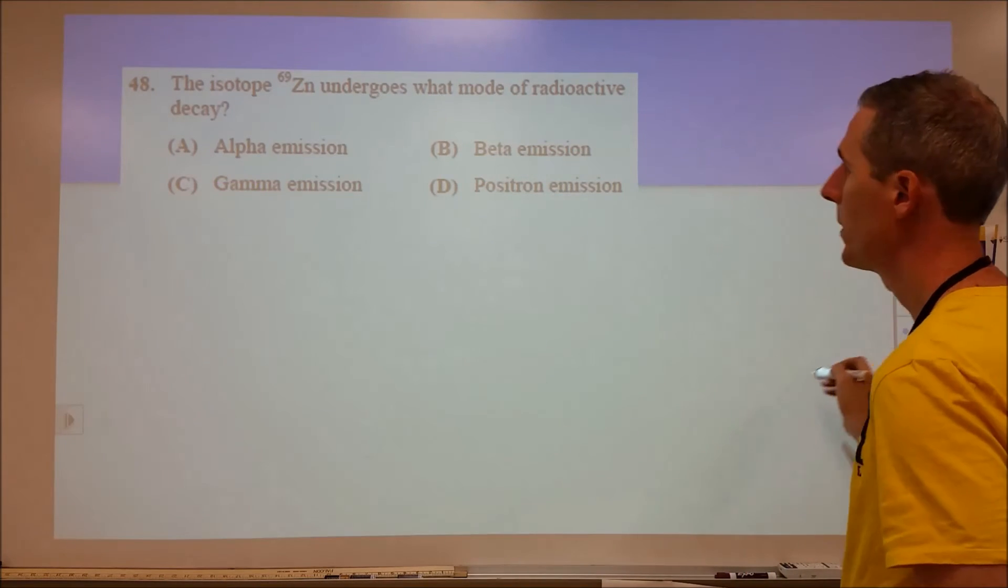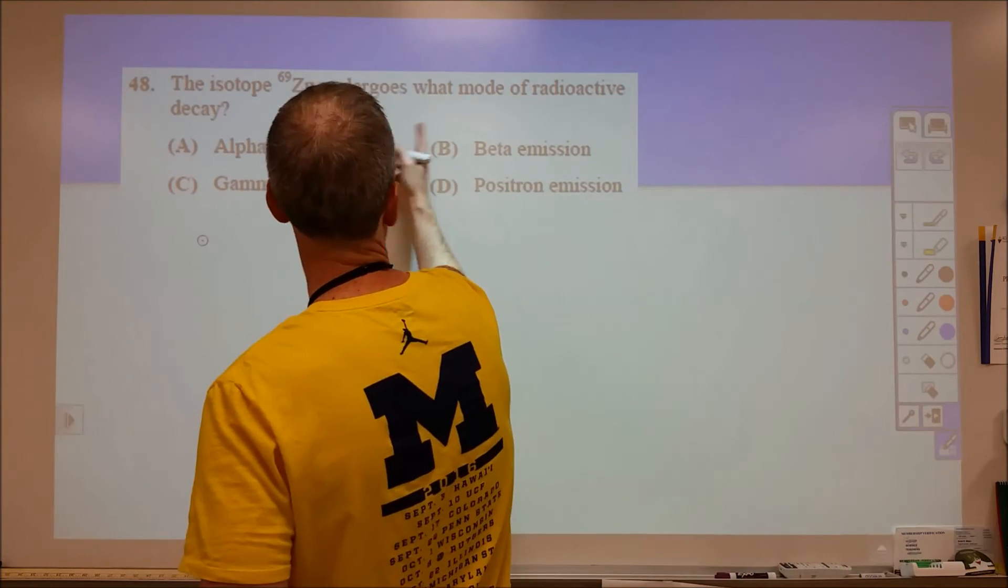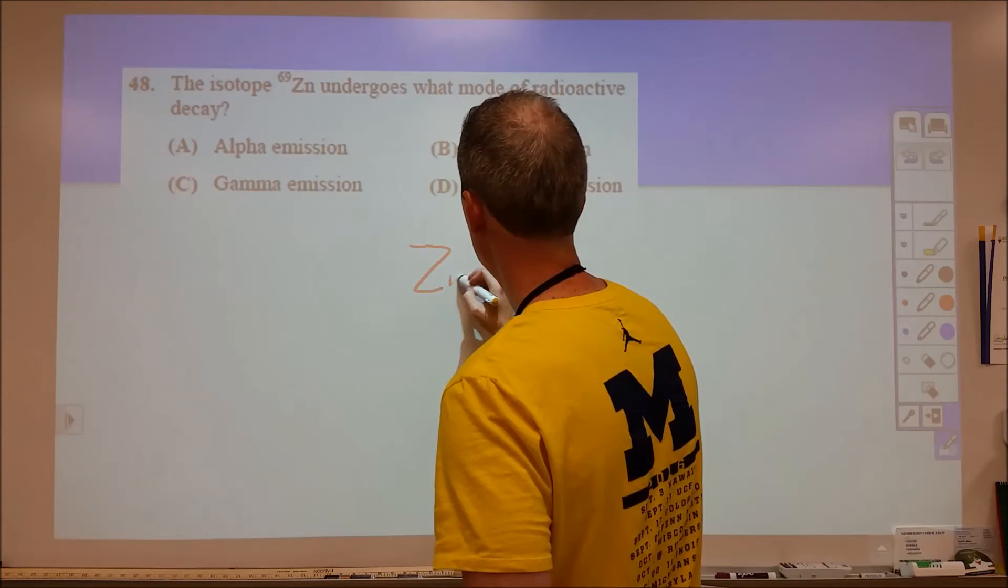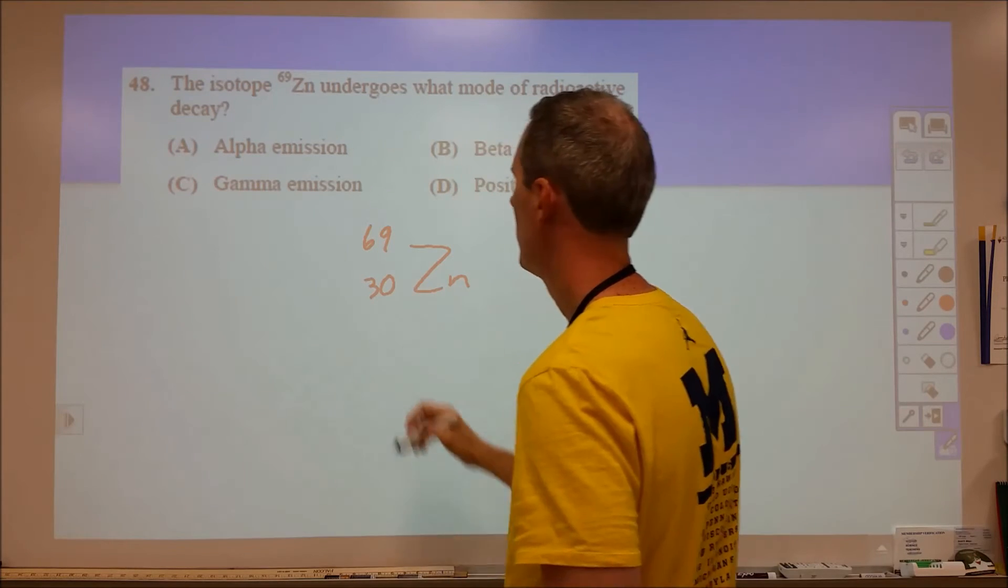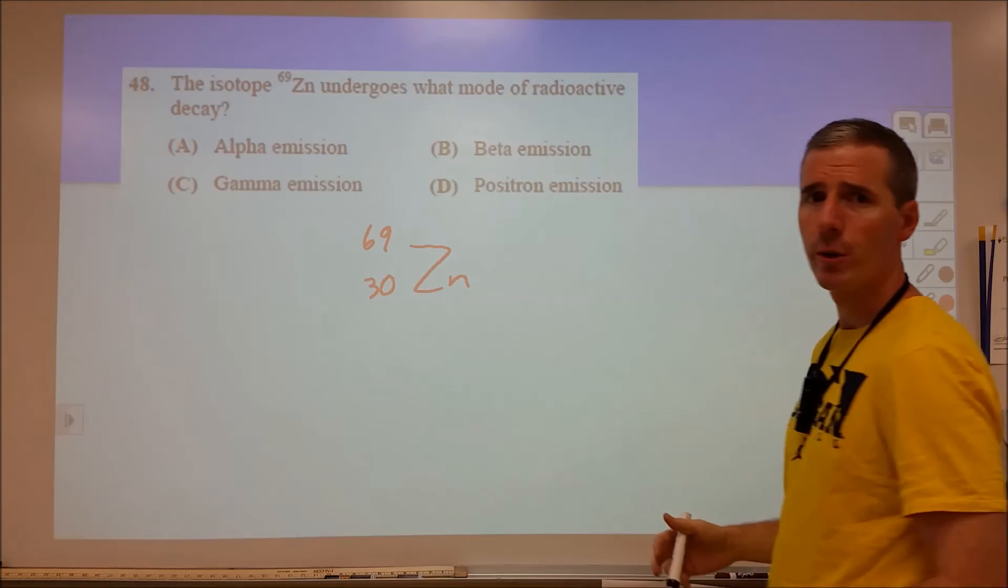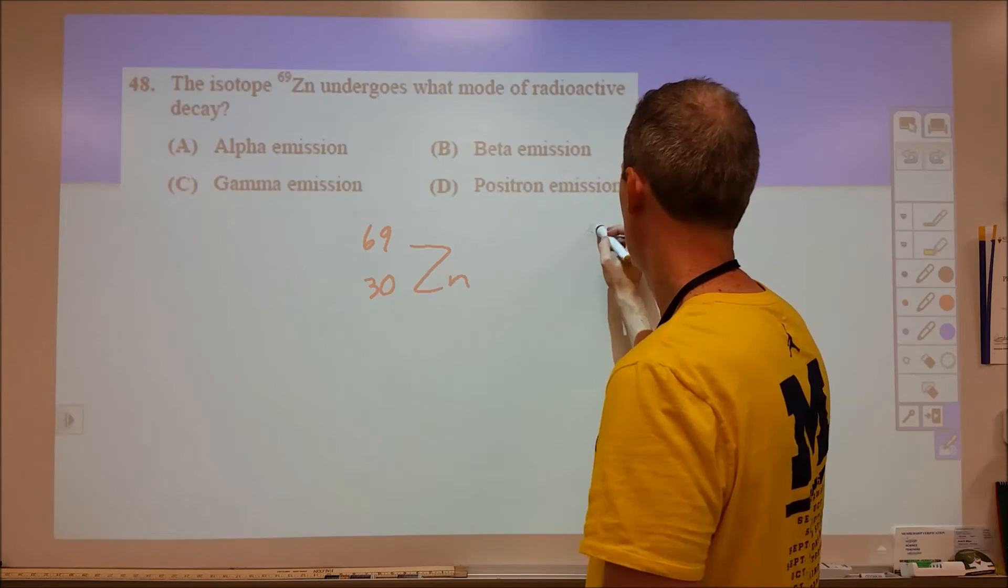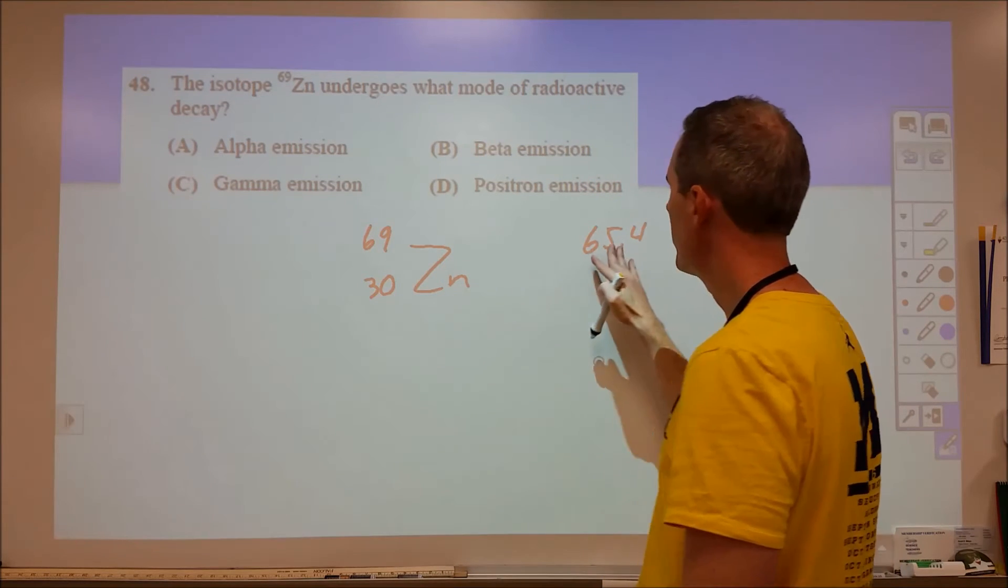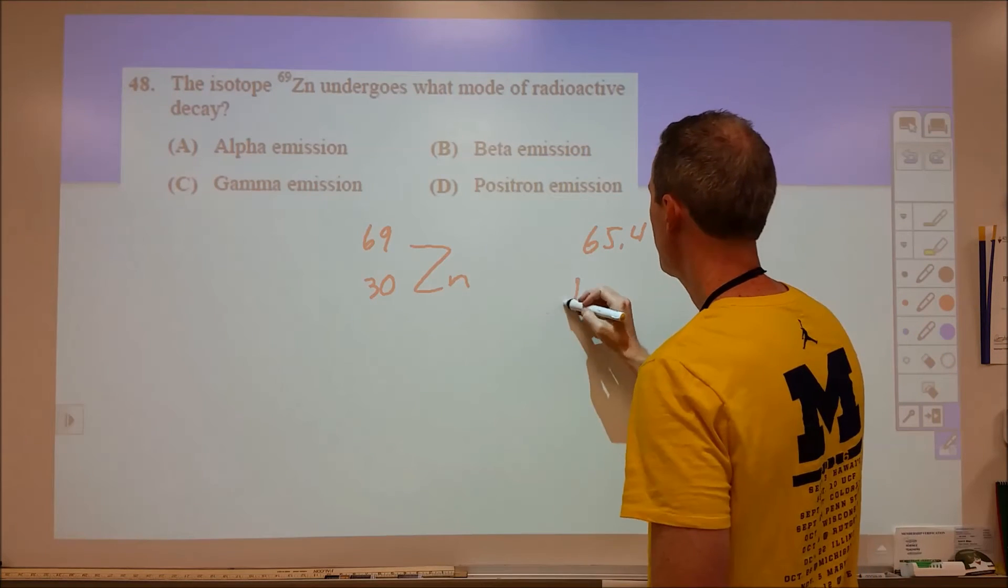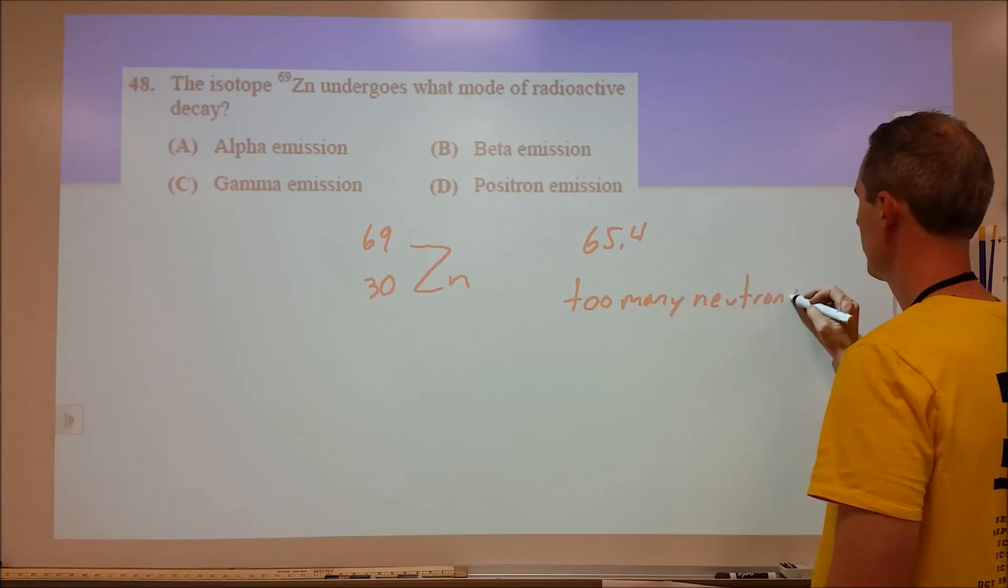This one is tricky because you probably don't spend a lot of time on this. We're looking at zinc and what type of radioactive decay would we see. You want to write out the entire isotope. So zinc is 69 and 30. You want to think, do I have too many protons or too many neutrons relative to where I would normally be? If we look up zinc's atomic mass, it's 65.4, which says the isotopes are generally around 65 total nucleons. This says 69. So this probably has too many neutrons.